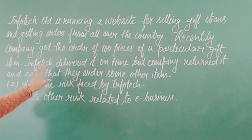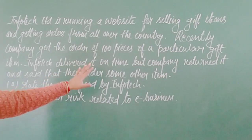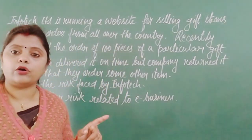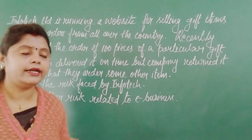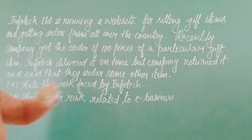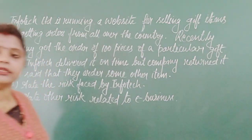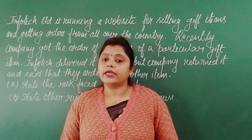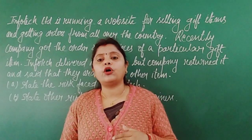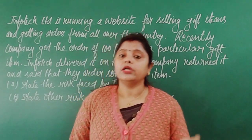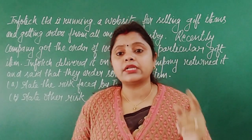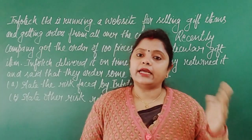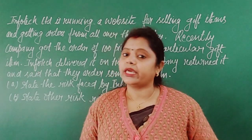Infotip delivered the order on time, which is very good. But the company which had placed the order returned it, saying that they had ordered some other item. So the goods were returned even though Infotip had received the order and delivered on time. The purchaser returned the goods on the ground that something else was ordered.